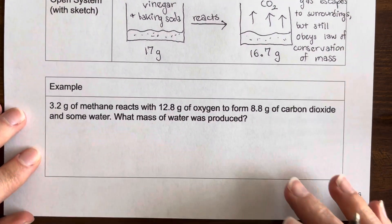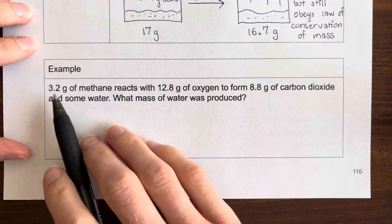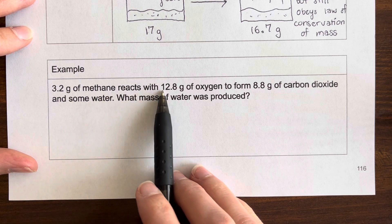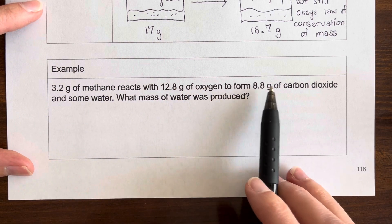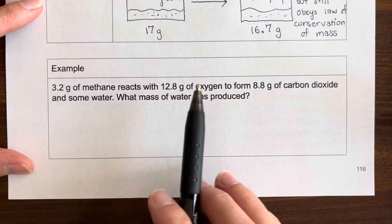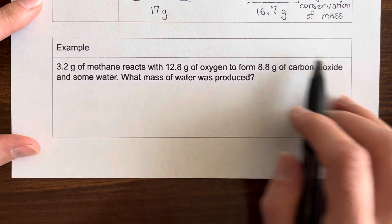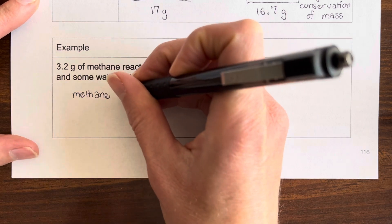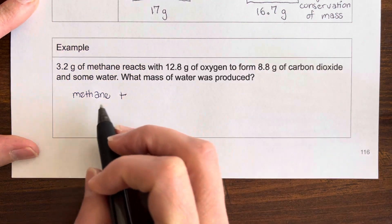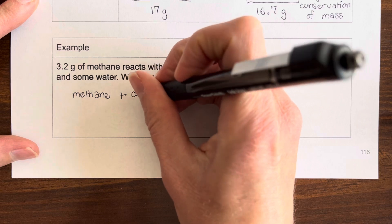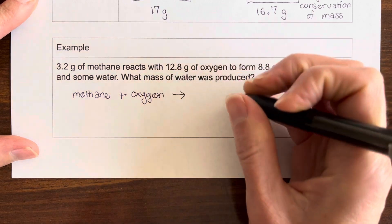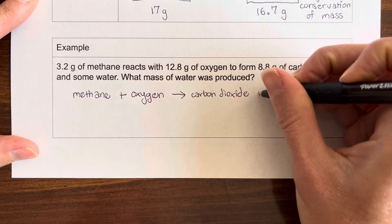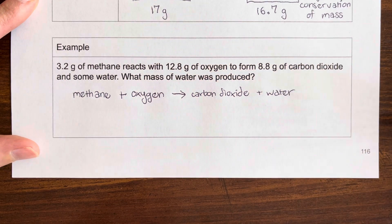So now let's do an example where we're using the idea of the law of conservation of mass to find a missing mass. This says 3.2 grams of methane reacts with 12.8 grams of oxygen to form 8.8 grams of carbon dioxide and some water. And we want to know what mass of water was produced. So let's write this out. Let's write out a reaction that represents what's going on here. I'm just going to write it out in words. I'm not going to worry about symbols for everything. For oxygen, you could write O2 or you can just write oxygen. Carbon dioxide and water. And they gave us masses for most of these.